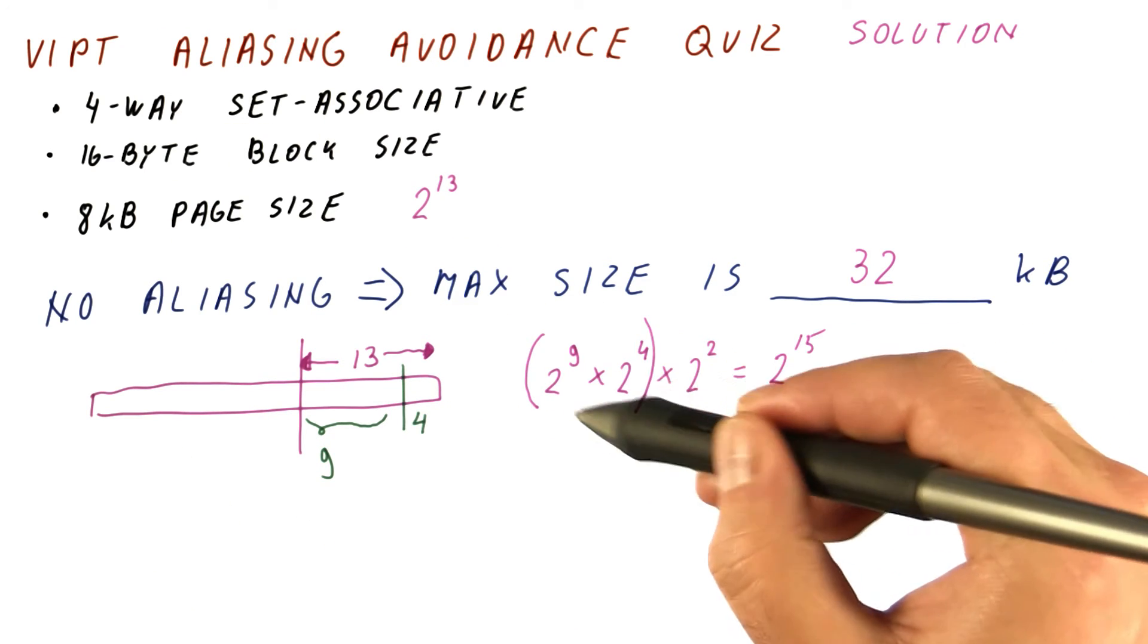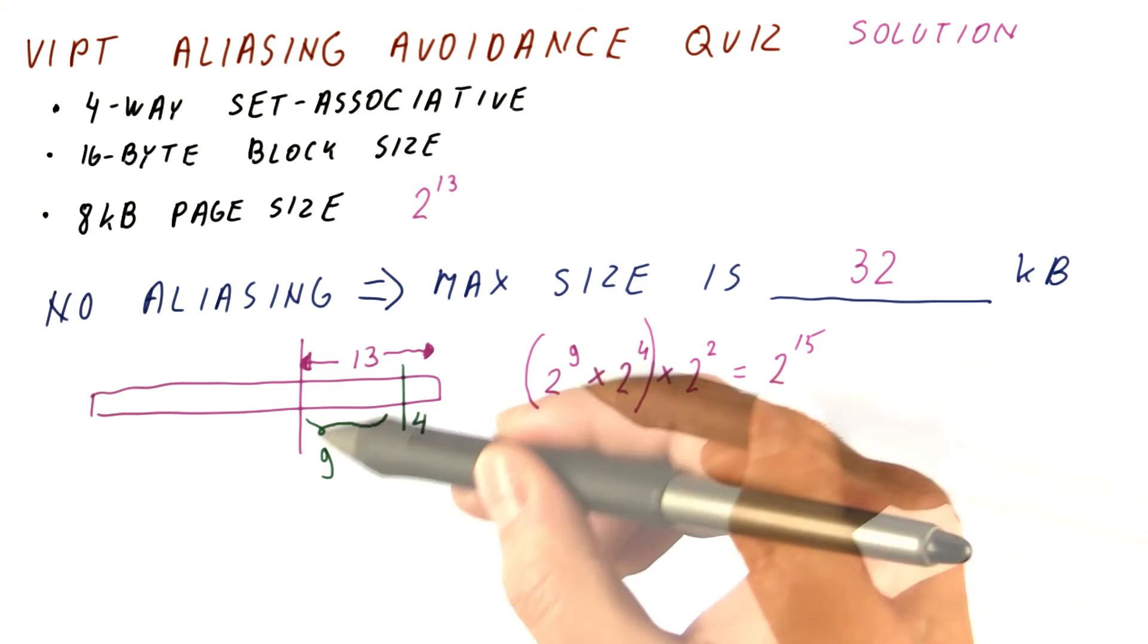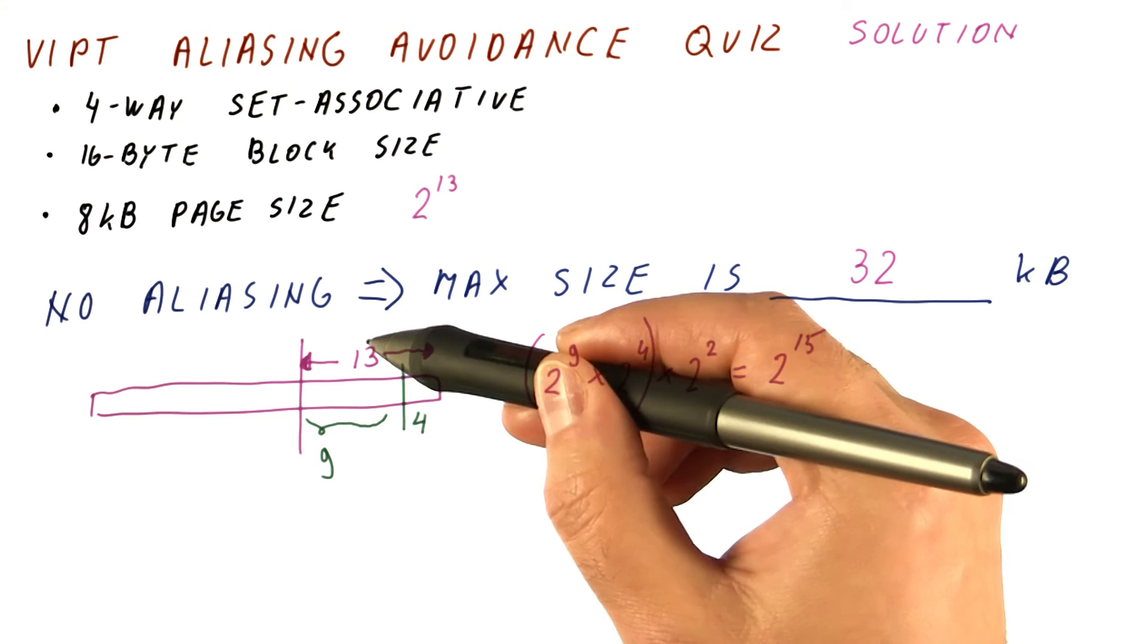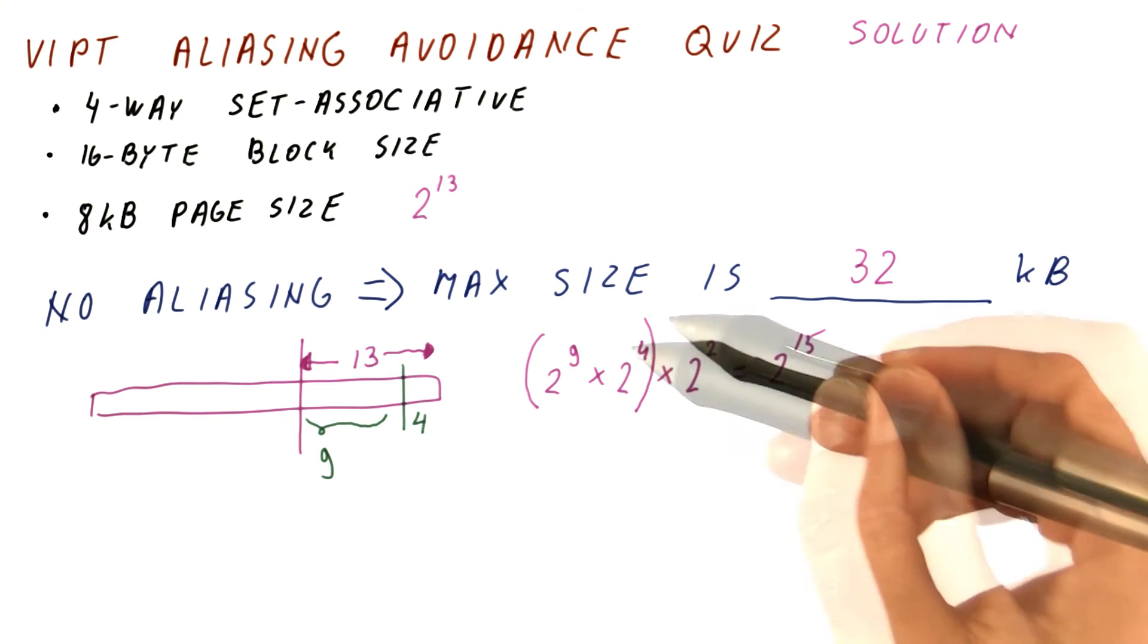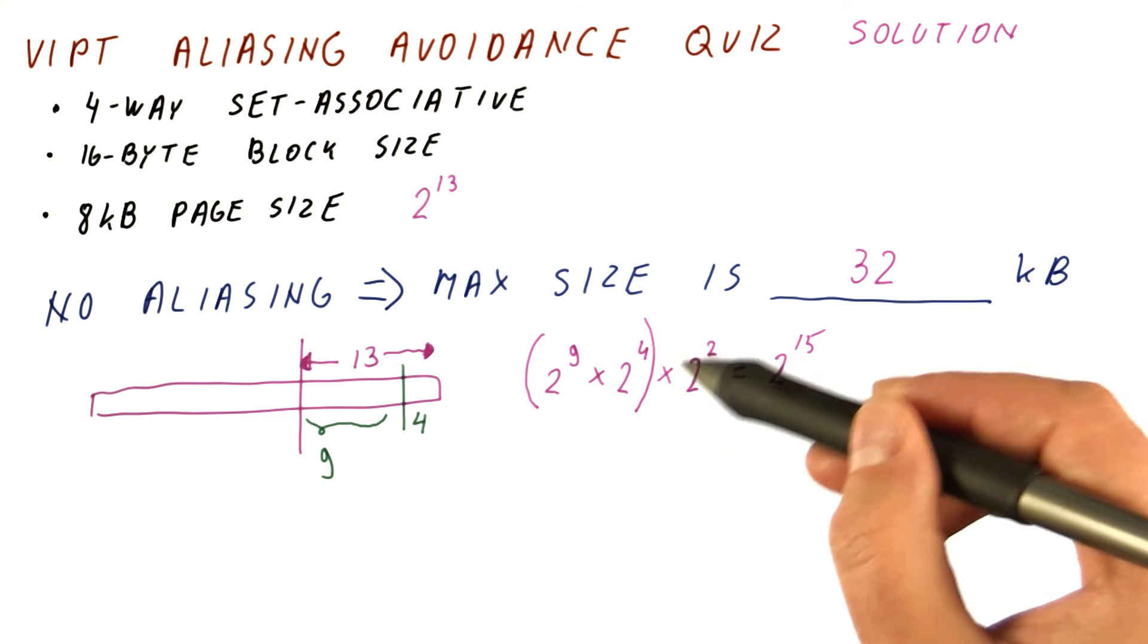Note that really these two have to be equal to the page size. Because 2 to this number of bits, times 2 to this number of bits, has to be equal to 2 to this number of bits. So really the maximum size of the cache here is the page size, times the associativity.